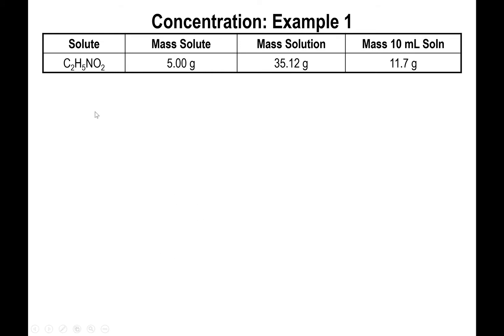We have a solute C2H5NO2, also known as nitroethane, and specifically we have 5 grams of this solute. The mass of the solution has been measured to be 35.12 grams, and we know that 10 mL of solution equals 11.7 grams. If you look carefully at this, this is telling you that 11.7 grams of solution are present in 10 mL of solution. So technically speaking, this last column is the density of the solution. If you divide 11.7 grams by 10 mL, you'll end up with the density of the solution.